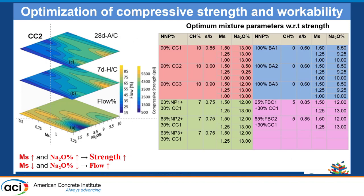These are the optimization results, presented as contour plots showing how compressive strength and flow change based on the two solution parameters. The material presented here is calcined clay 2. We could obtain around 6,000 psi strength at 28 days ambient-cured, and also around 6,000 psi after heat curing at 7 days. Flow values were almost greater than 50%, which is desirable. We found that to get higher strength you must increase the two solution parameters, and to get higher flow you must decrease them.